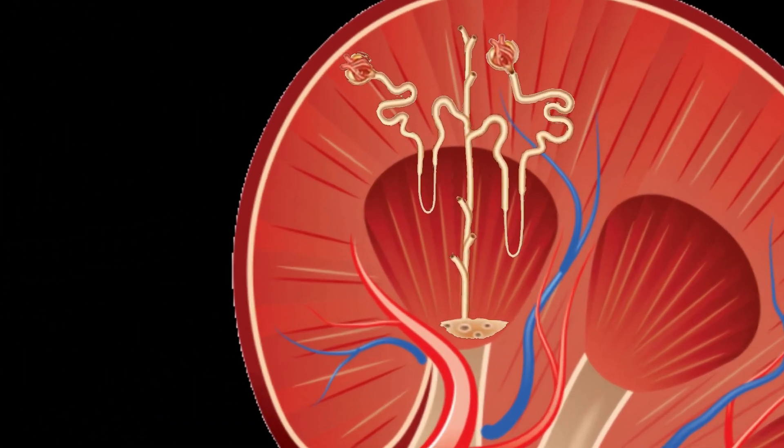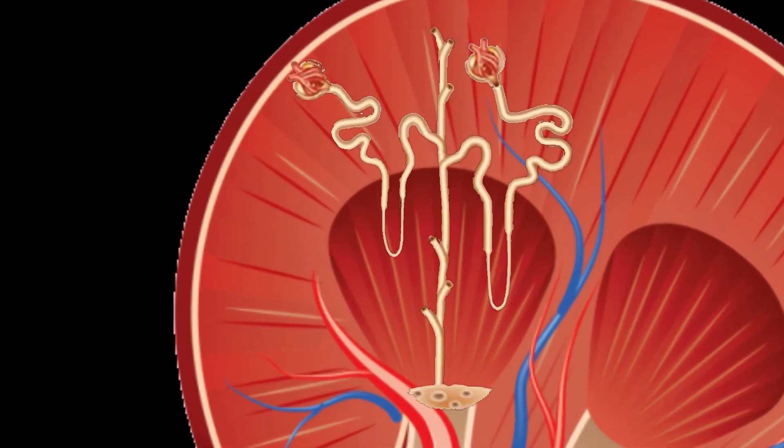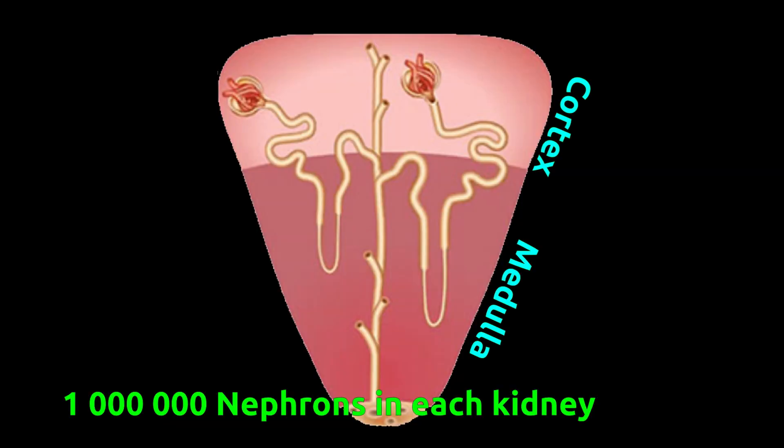The nephron is the kidney's functional unit that removes waste from the body. Nephrons are found in both the cortex and the medulla, and there are around one million nephrons present in each kidney.